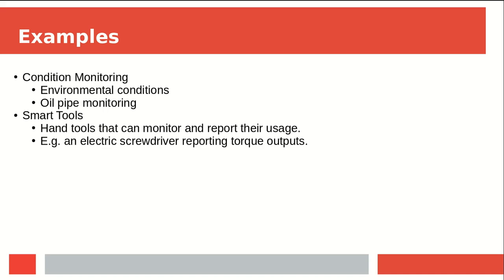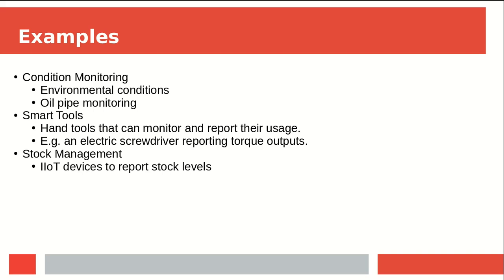Other examples might be smart tools that can report the condition they're in and how they're being used. For example, you might have a power drill that can record the level of charge in its battery, so if the battery is starting to deteriorate you'll know to replace it — or perhaps an angle grinder with a vibration sensor on it so you can monitor the vibration it produces for safety reasons. You might also use stock management devices to track the movement of stock and work in progress around your factory, and give you an idea of when you'll need to order more, rather than having to do a manual stock take.